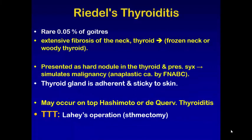Another cause of thyroiditis is Riedel's thyroiditis, which is a rare cause — forming about 0.05% of goiters. In Riedel's thyroiditis, there is extensive fibrosis in the neck involving the thyroid, leading to frozen neck and woody thyroid. It may be associated with retroperitoneal fibrosis. The patient usually presents with hard nodules in the thyroid, and the thyroid is adherent and sticky to the skin.